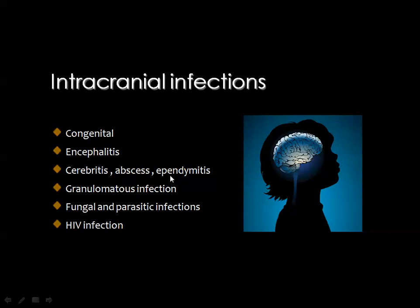If you remember, we discussed the adult cases in these categories: the congenital lesions, the issue of encephalitis, then cerebritis, granulomatous disease, fungal, and parasitic infection. And finally, we talked about some of the HIV manifestations in the adult brain.